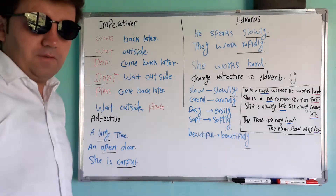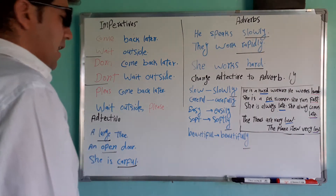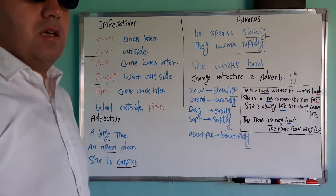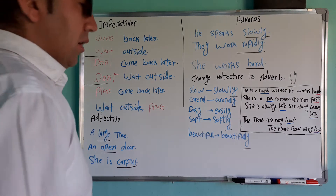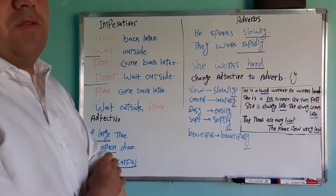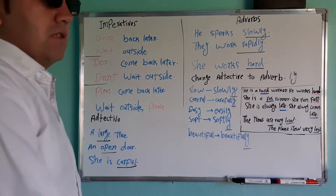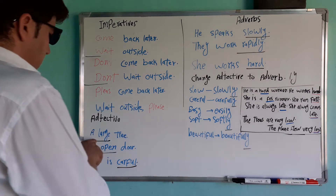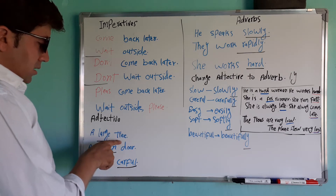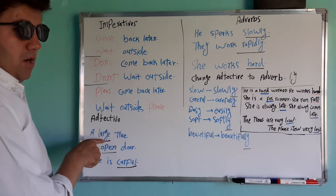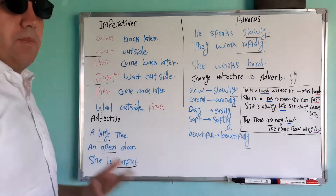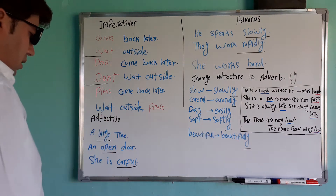بینیم adjective را. Adjective is a word that modifies a noun — چی را توصیف می‌کنه؟ نون را. Example: a large tree — درخت بزرگ. Large یعنی adjective است. چی را توصیف کرده؟ درخت را — درباره noun توصیف کرده. Large tree.